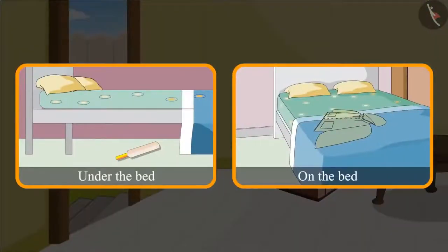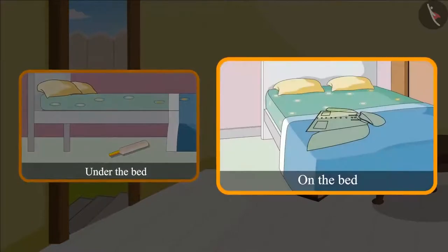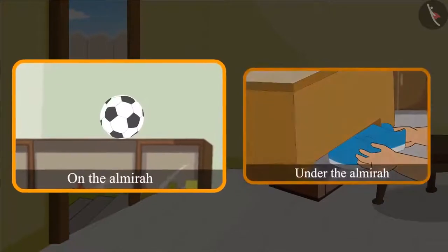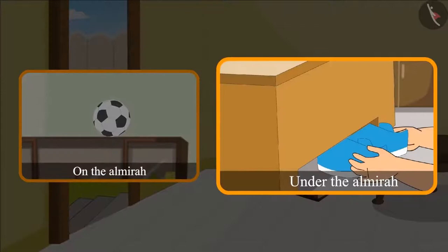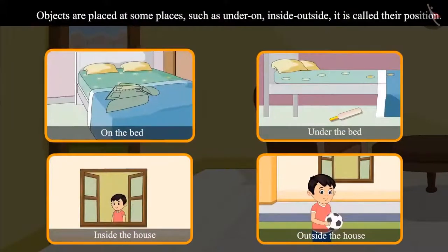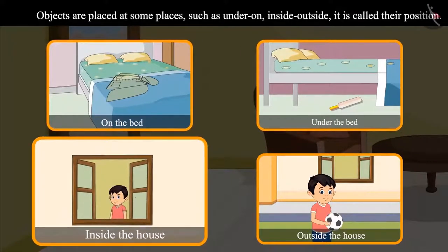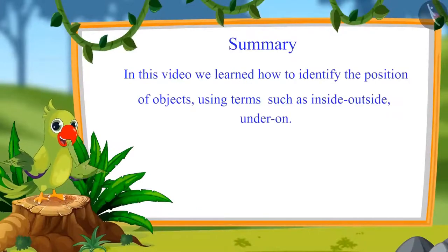Children, did you see where Chotu's bat was kept? Chotu's bat was kept under the bed and his raincoat was kept on the bed. The new ball was on top of the almira and Chotu's shoes were under the almira. We have seen that objects are usually kept at certain places and words such as under, inside, and outside are used to exactly tell us their position.